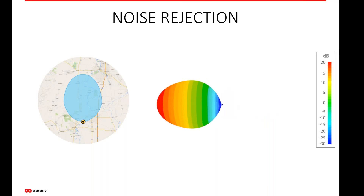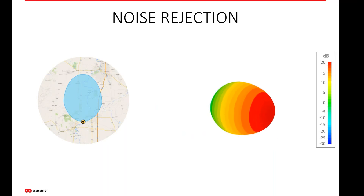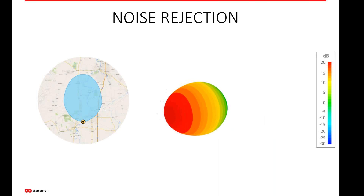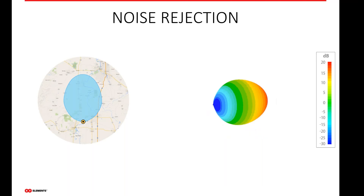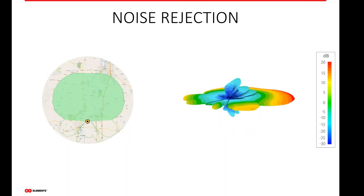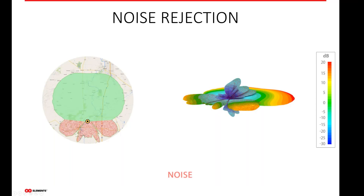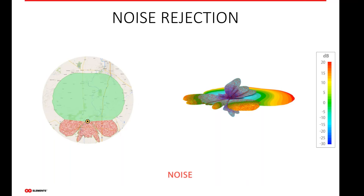We have other webinars where we explain how to understand radiation patterns in data sheets. You simply cannot compare the performance of this antenna with the horn, because those side lobes create most of the problems you're seeing in the field.